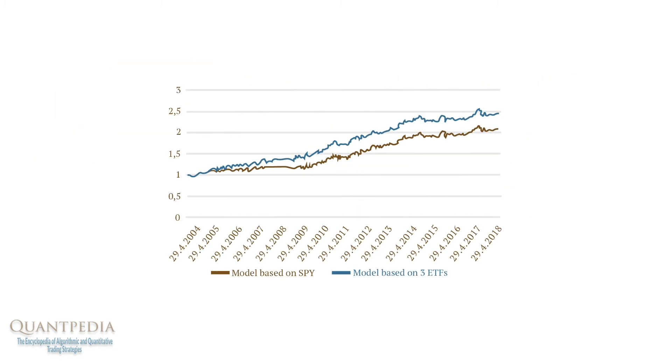Suppose we use the signal from composite calendar trading strategy and invest into the best performing ETF out of the three mentioned before. Our enhanced strategy would be then able to outperform a simpler strategy based only on the SPY ETF without the momentum factor overlay.